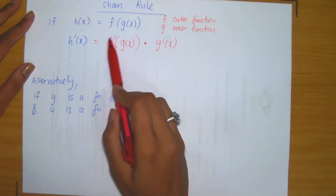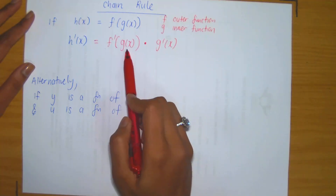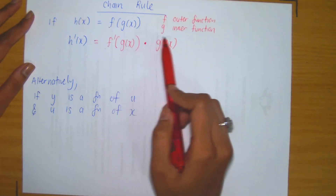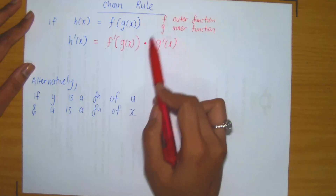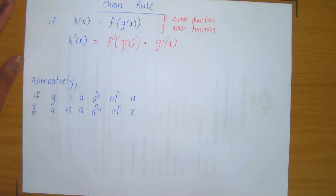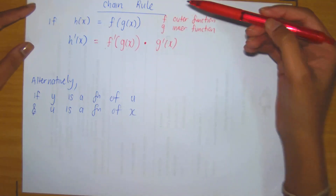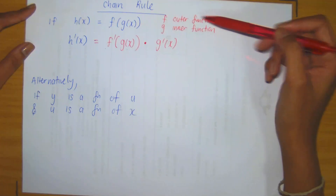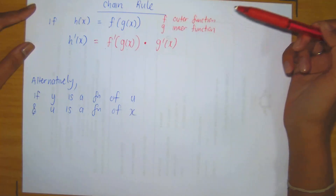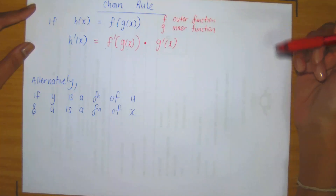So it's an important slogan: derivative of the outer evaluated at the inner, multiplied by the derivative of the inner. If you remember that, then when computing the derivative of compositions — meaning whenever you're using the chain rule — all you have to do is identify the outer and identify the inner.